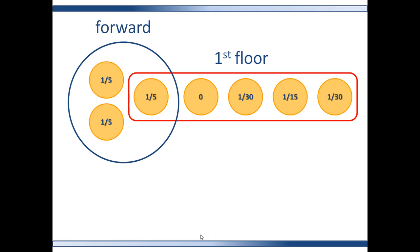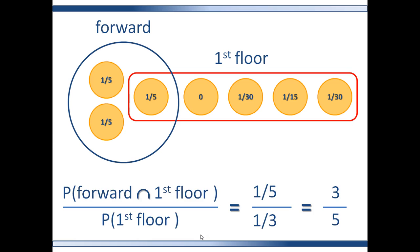The conditional set — which is the set of first floor patients — contains five patients with various probabilities that sum to one-third. So the numerator is one-fifth and the denominator is one-third, which we can rewrite as three-fifteenths and five-fifteenths, and the result is three-fifths.